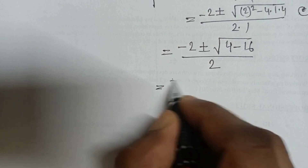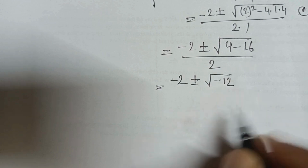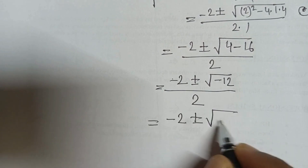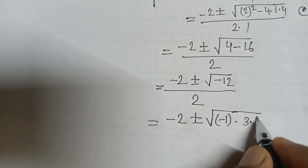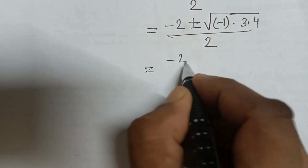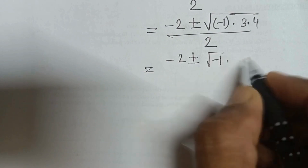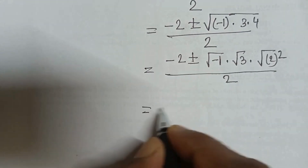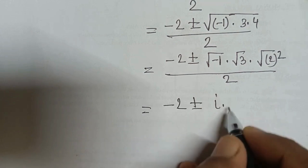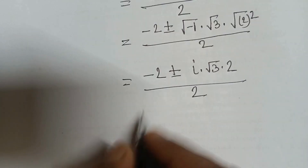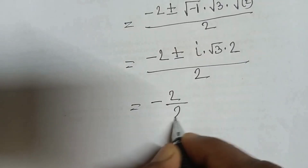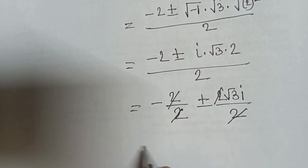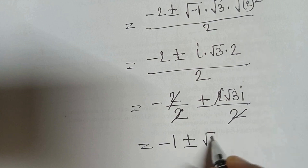We get root of minus 12 divided by 2, that is minus 2 plus or minus root of minus 1 times 3 times 4 divided by 2. This gives minus 2 plus or minus root of minus 1 times root 3 times 2, divided by 2, equaling minus 2 plus or minus 2 root 3 i divided by 2.